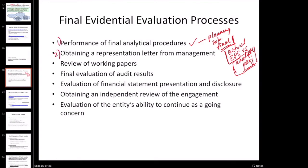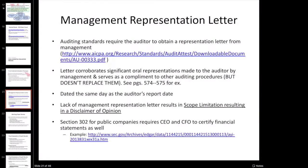Number two is obtaining a rep letter from management. We talked about this earlier because we said we would get management to rep to the fact that they weren't aware of any significant contingencies that they hadn't told us about. There are lots of other things that go in the representation letter. The purpose of the letter is to corroborate significant oral representations made to the auditor throughout the audit. So all these inquiries we've been making with management along the way, all these things they've been telling us — this letter is going to help corroborate them.